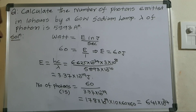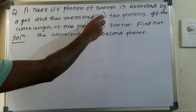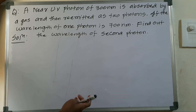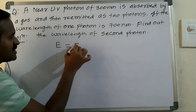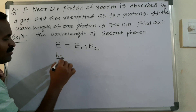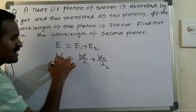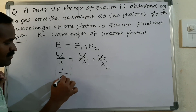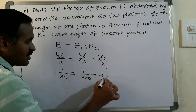The next question: a near-UV photon of 300 nanometers is absorbed by a gas and re-emitted as two photons. The wavelength of one photon is 700 nanometers. Find the wavelength of the second photon. Using the energy relation: E equals E1 plus E2, and since E equals hc divided by lambda, hc cancels, giving one divided by lambda equals one divided by lambda one plus one divided by lambda two.